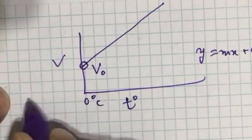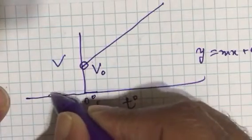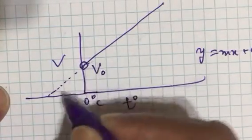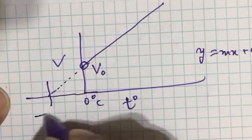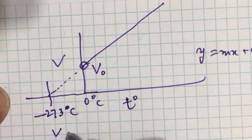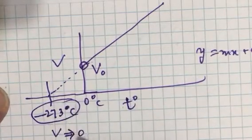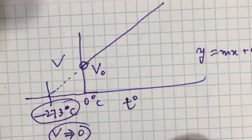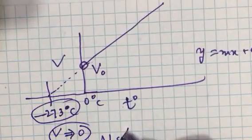If we keep on cooling, the volume goes on decreasing. At this temperature minus 273 degree centigrade, volume of a gas tends to be zero. This temperature where volume of a gas becomes zero is called absolute zero temperature.